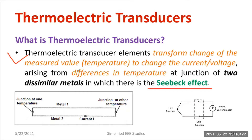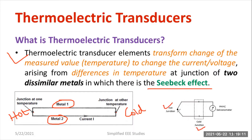Two dissimilar metals are connected: one will act as a hot junction and another will act as a cold junction. You can measure the temperature in terms of output voltage, so the cold junction needs to be calibrated. The difference in temperature between the hot junction and the cold junction is directly proportional to the electrical EMF generated.